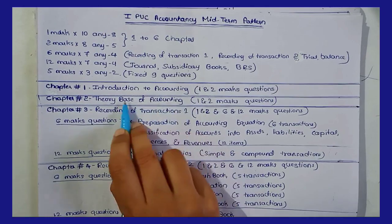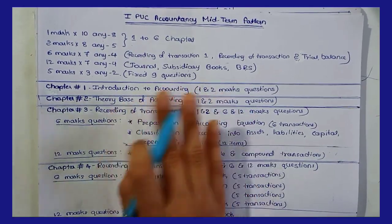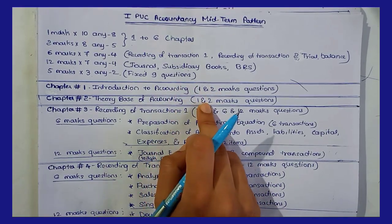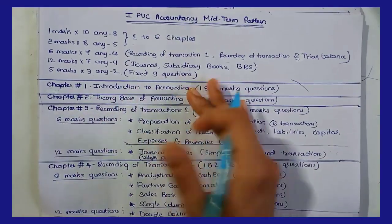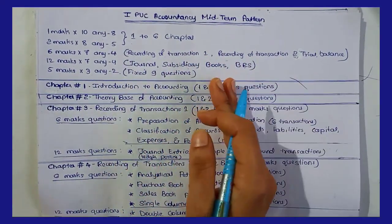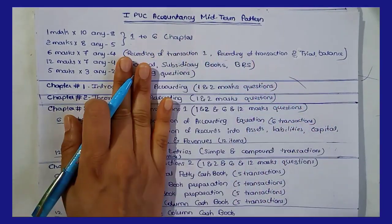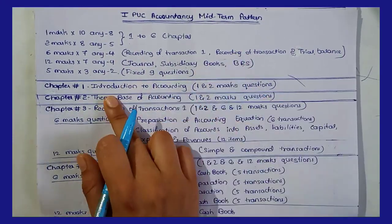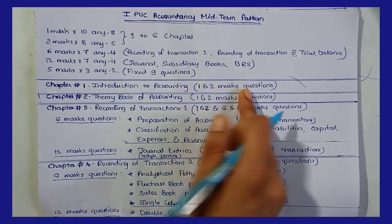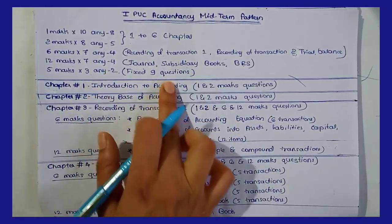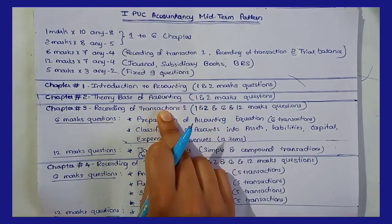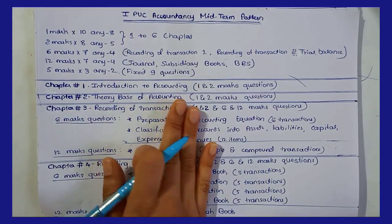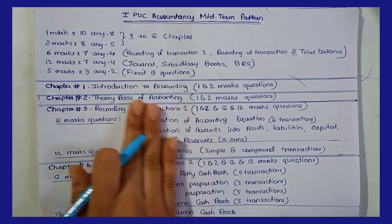In these chapters, they will explain the concept — that is one question. In the second chapter, there are many terms: Assets, Liability, Capital and other terms, Systems of Accounting, Types of Accounts, Meaning of Accounting, and Definition of Accountancy. You can learn these from chapters 1 and 2, which form the first questions.